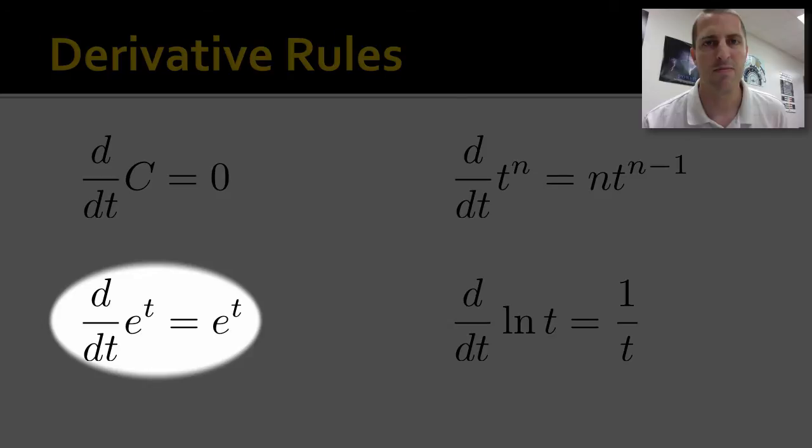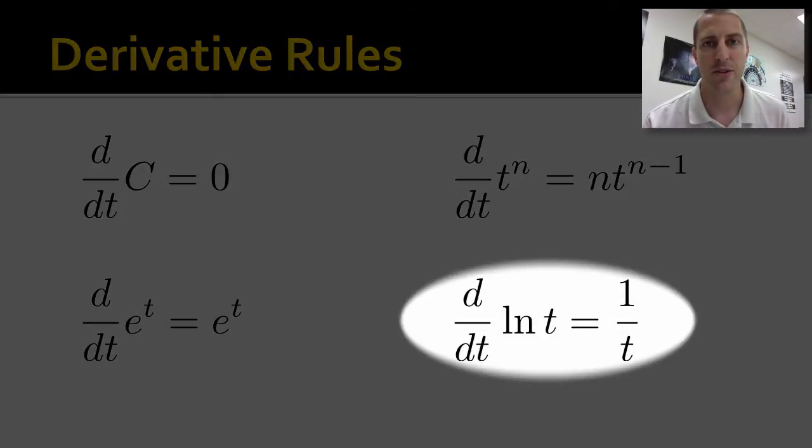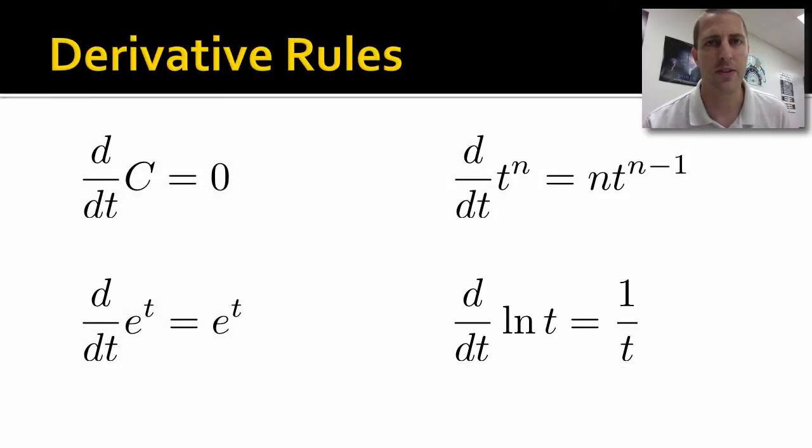Derivative of e^t is just e^t. Pretty straightforward. The derivative of the natural log of t gives you 1/t. Those last two you won't encounter as often, but you will from time to time.